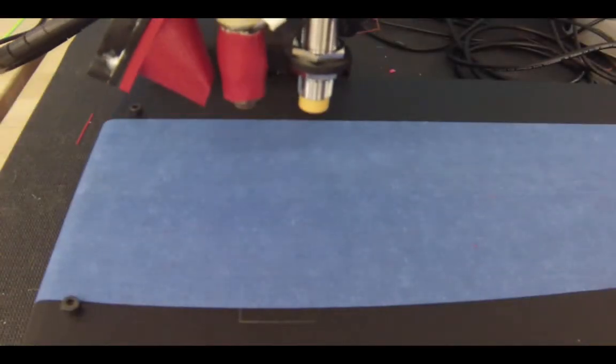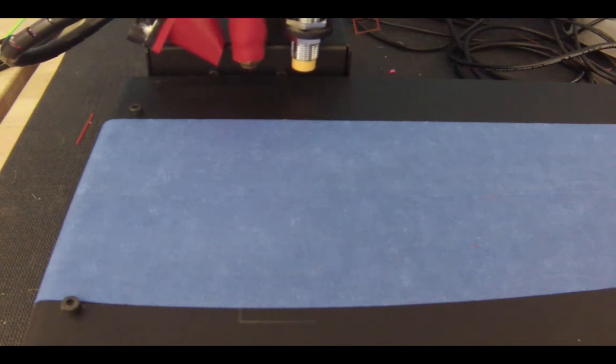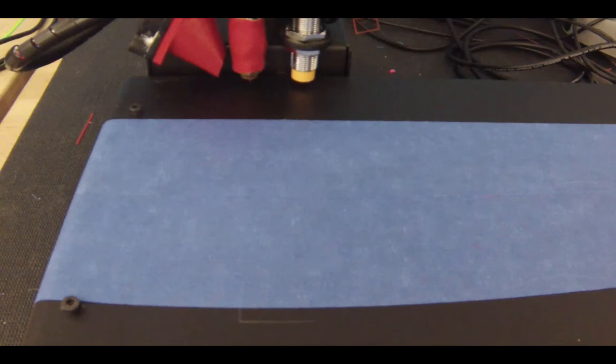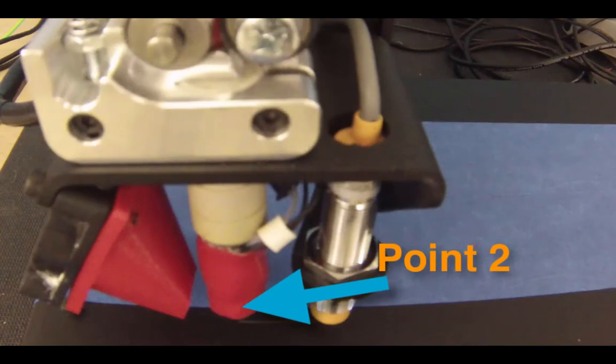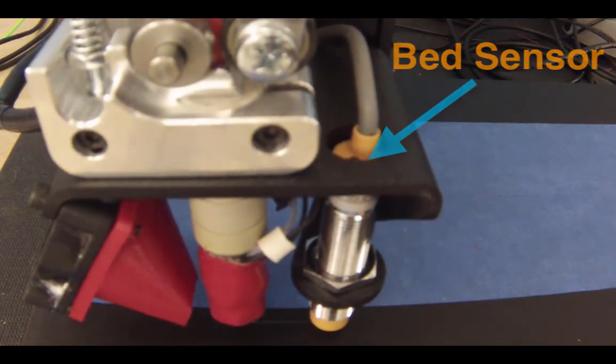The Printrbot Simple Metal has a great feature where it can automatically detect the level of the bed. This saves a lot of trouble with 3D printing because the bed needs to be the right level to get the print to stay on the platform. It measures where the platform is by going around three different points and measuring where the metal bed is. The bed sensor lights up when it detects the metal bed below.